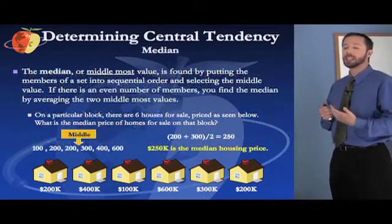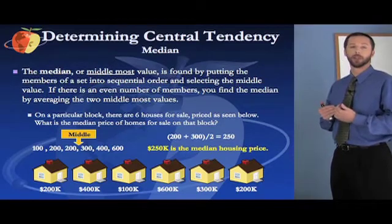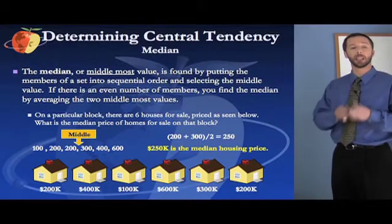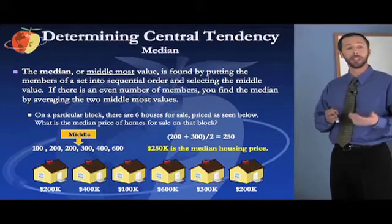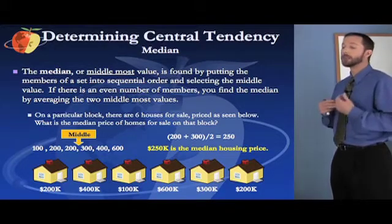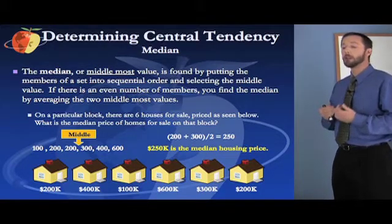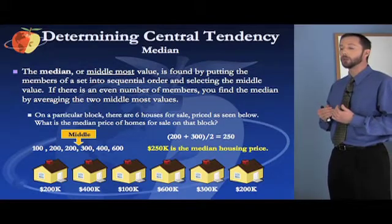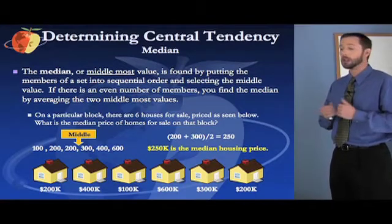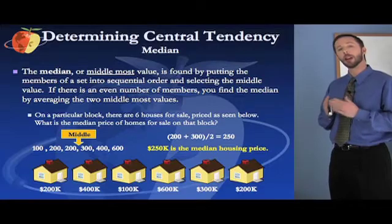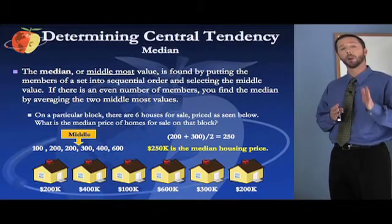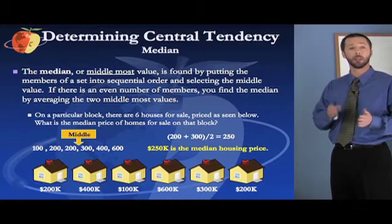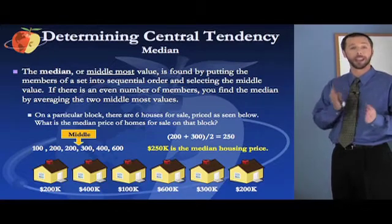Next, the median. The median is the middlemost value. You can think of it like the median that goes down the middle of the road — median, middle. It's found by putting the members of a set into sequential order and selecting the middle value. If there is an odd number of members, there's a value right in the middle — that's your median. If there's an even number, there won't be one directly in the middle.